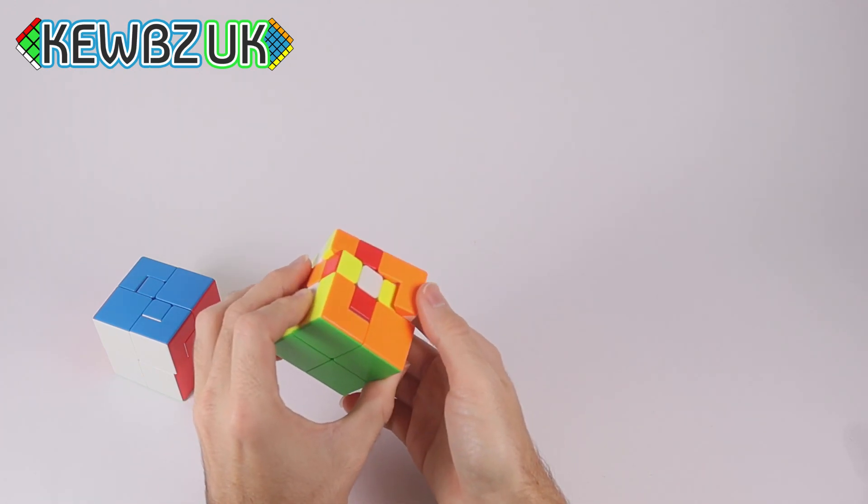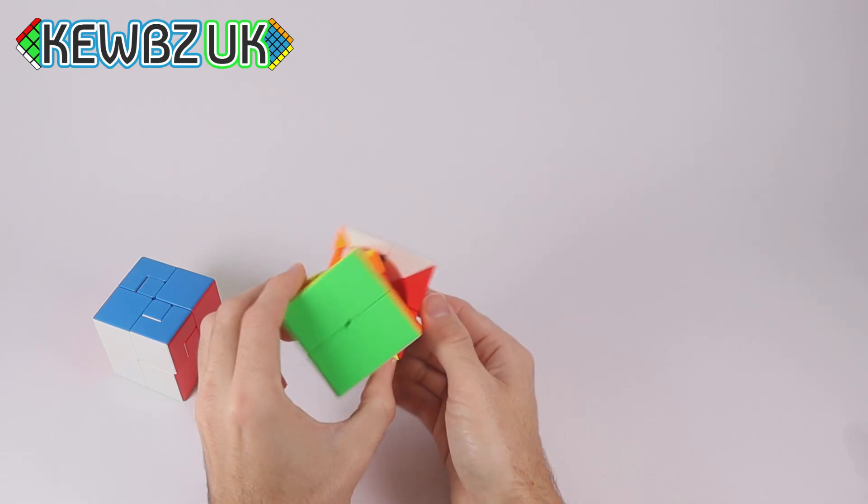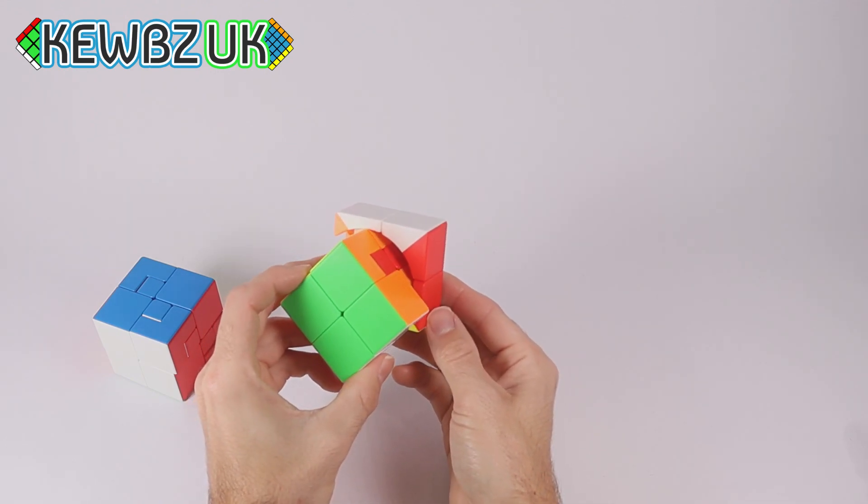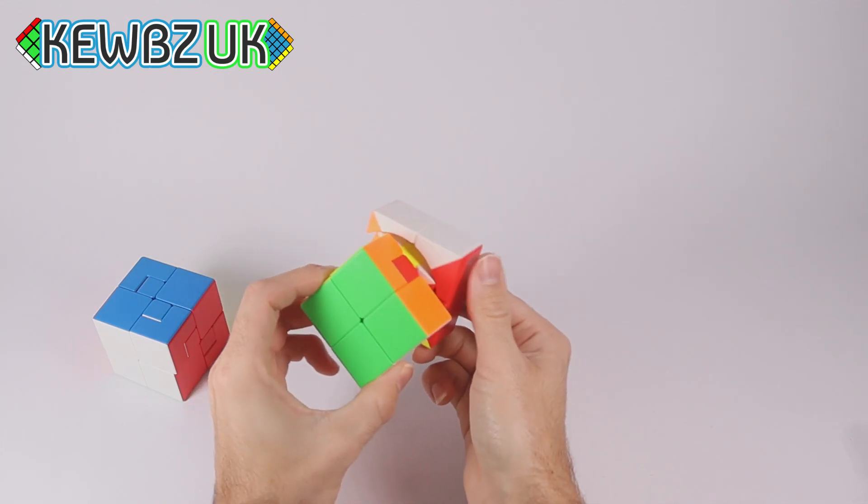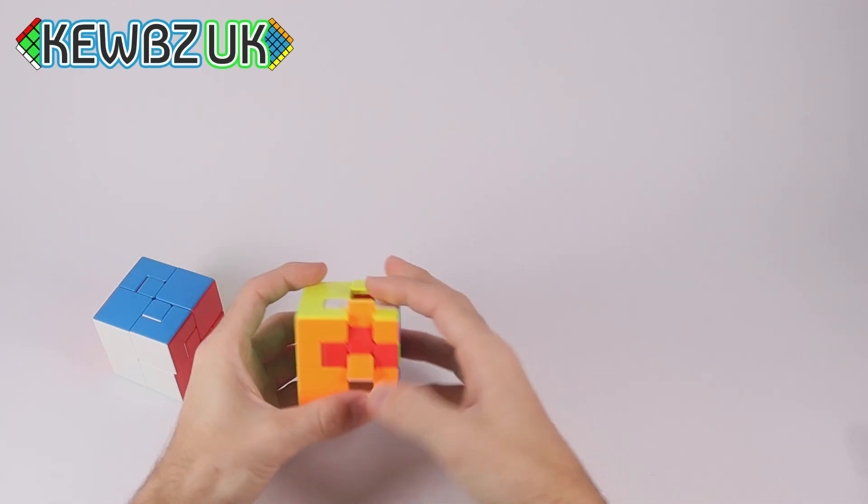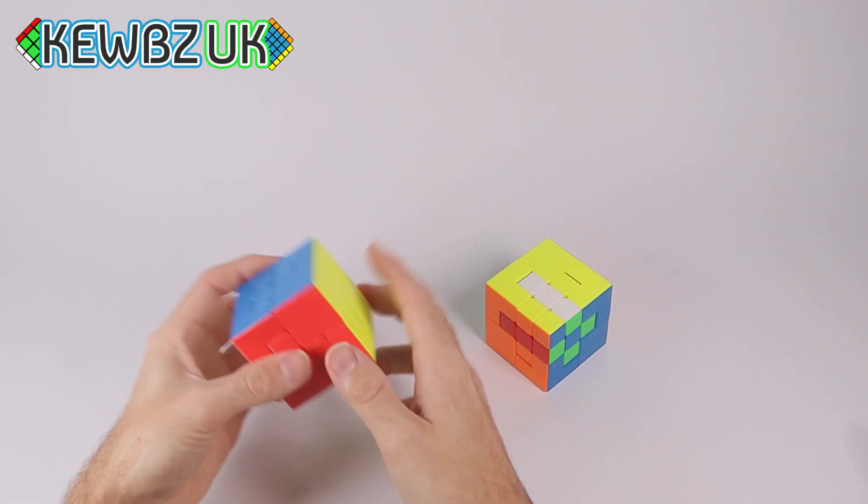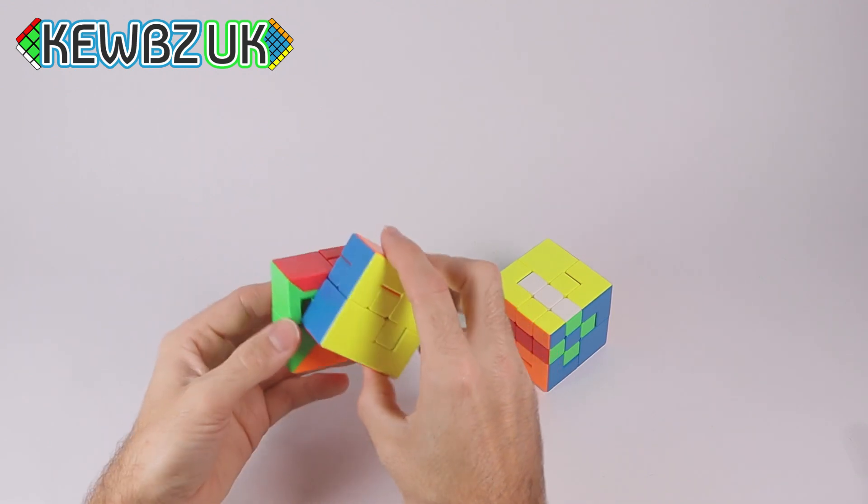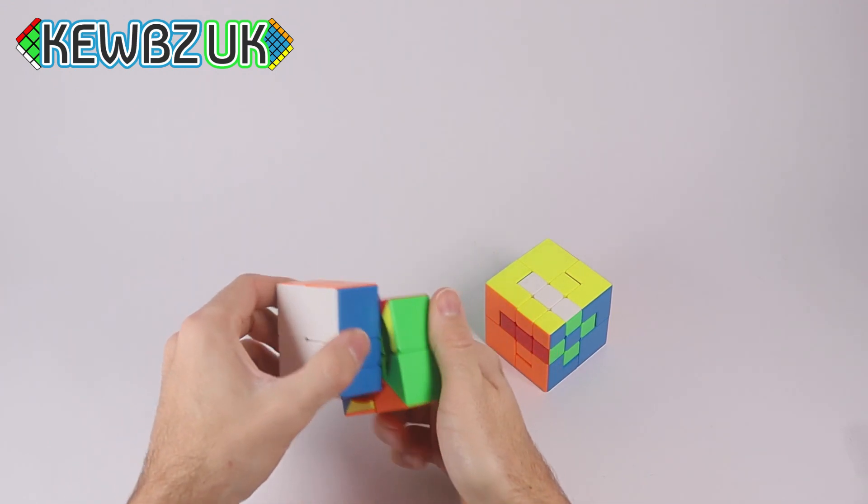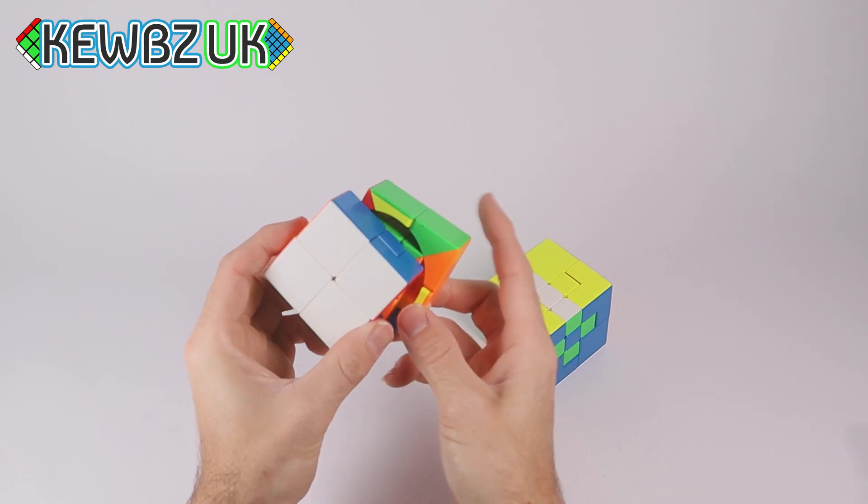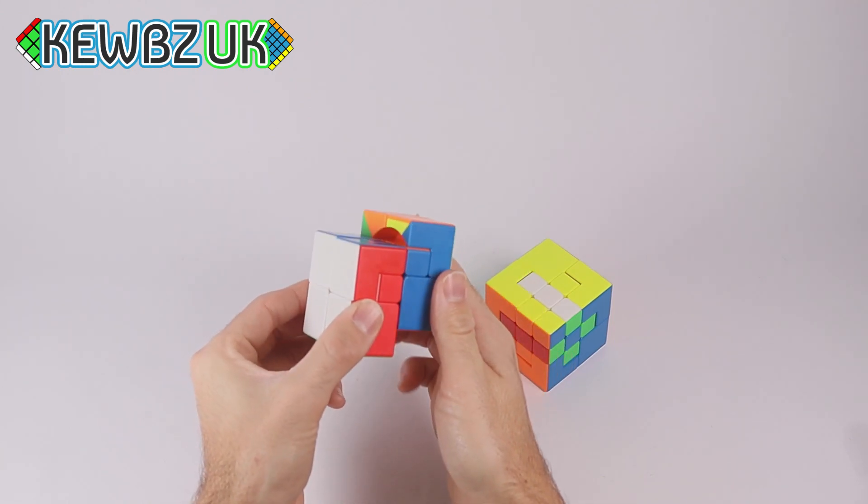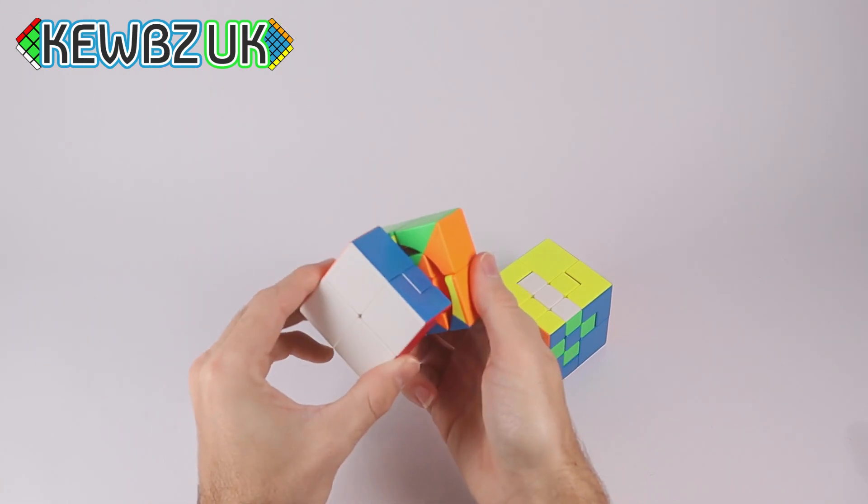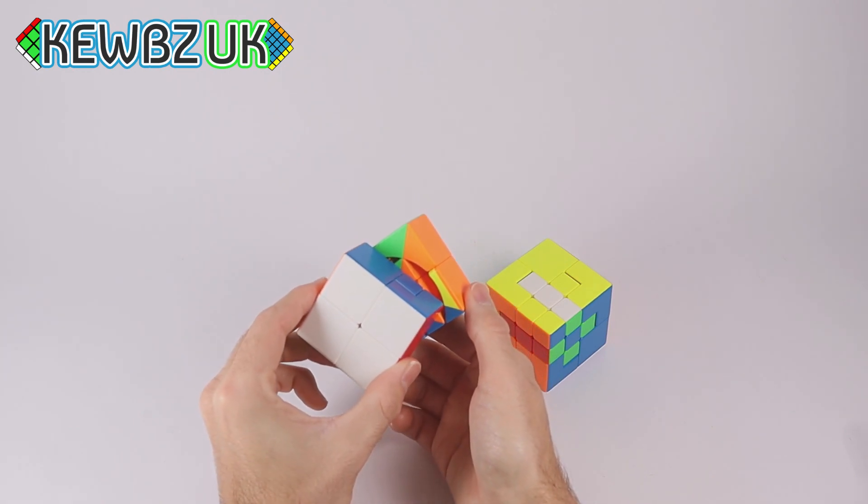And then if we do a little bit of a funny turn here, inside you can still see the rest of the layers. So yeah, that's the Puppet 2. And then the Puppet 1 is still, if we turn it just right, there we go, in there, you can still see three layers or the 3x3 hiding inside.